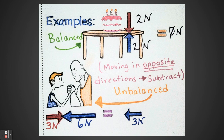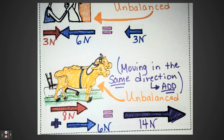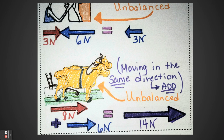Now looking at the two oxen pulling the cart, these oxen are moving in the same direction, so we're going to add them. The vectors are both going to the right, so since it's the same direction we add. One ox is pulling with eight newtons and the other is pulling six newtons, so eight newtons plus six newtons equals fourteen newtons. Fourteen does not equal zero, so this is unbalanced.